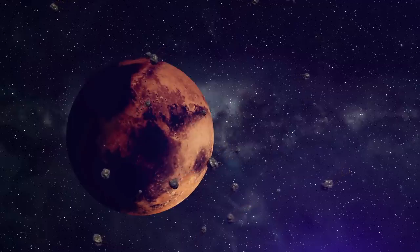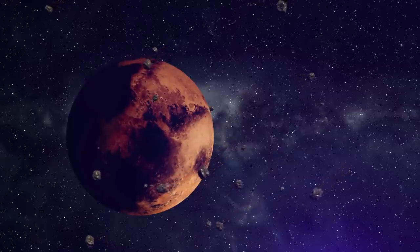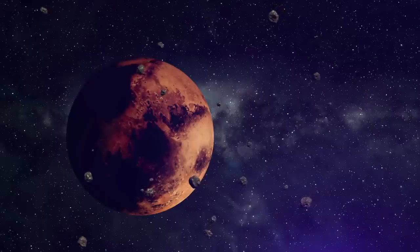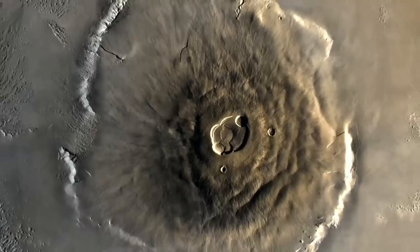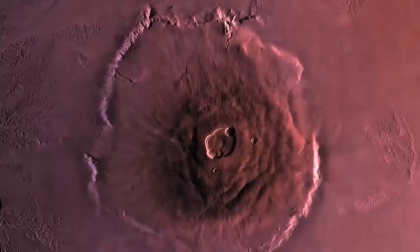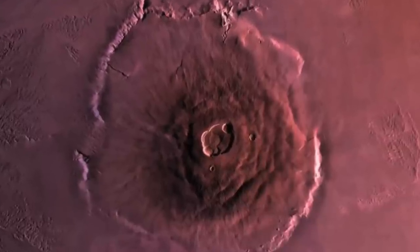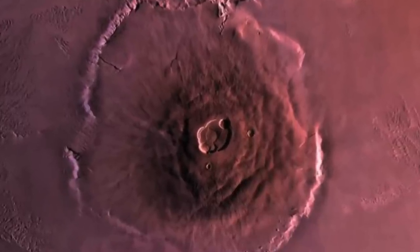Mars has no water, neither ocean, nor sea, nor river runs through it. But it has many mountains, including Mount Olympus, which culminates at 26 kilometers in altitude, or 16 miles in height.